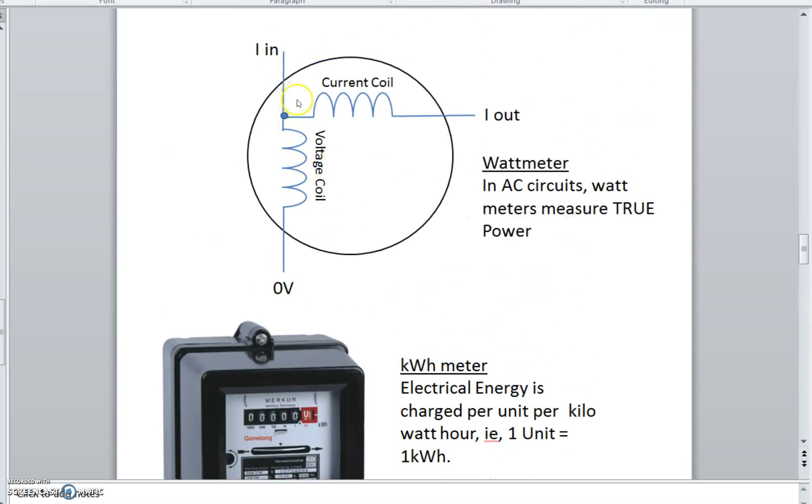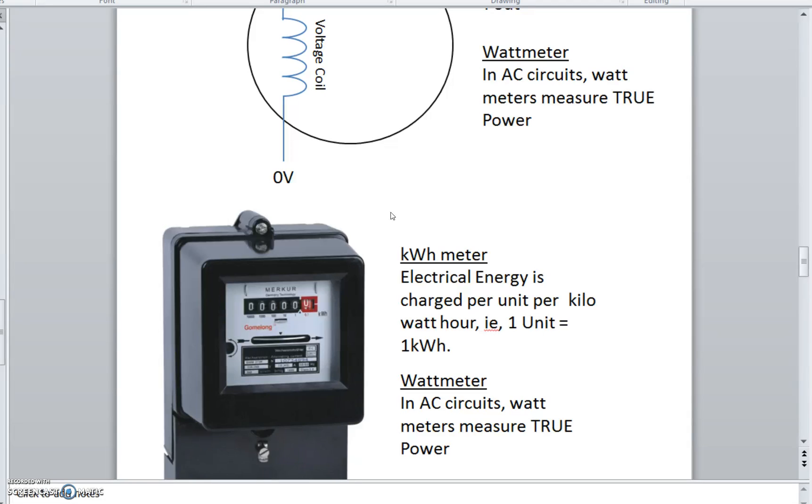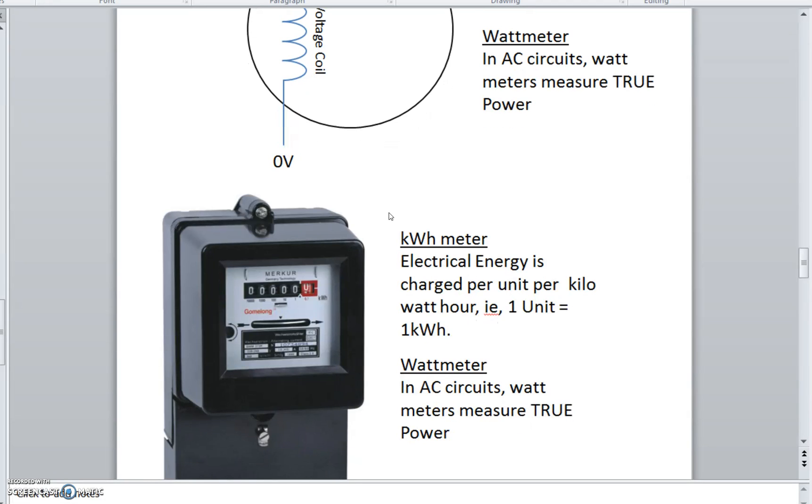So, wattmeter then, we have a current coil. We have a voltage coil. These measure true power. And they effectively require a potential coil across the supply, zero, so that's our voltage reference, and a current coil. And that in turn gives us our wattmeter reading.